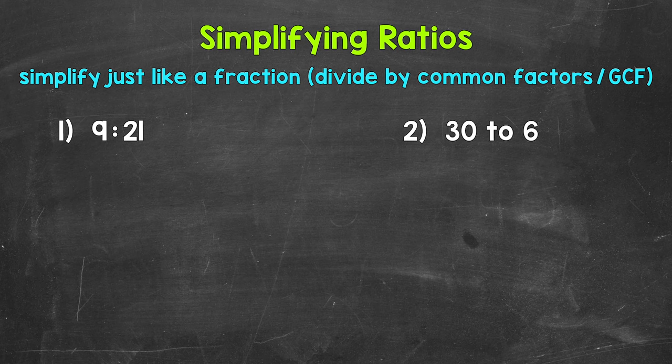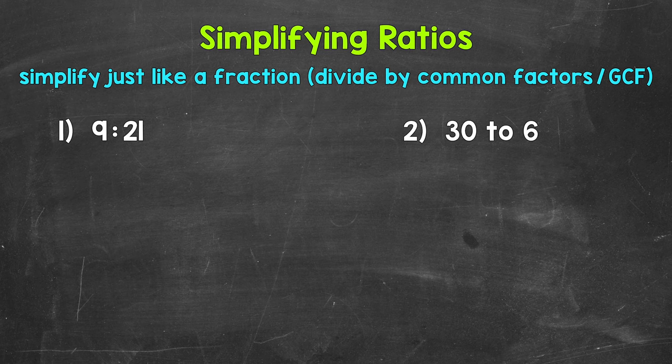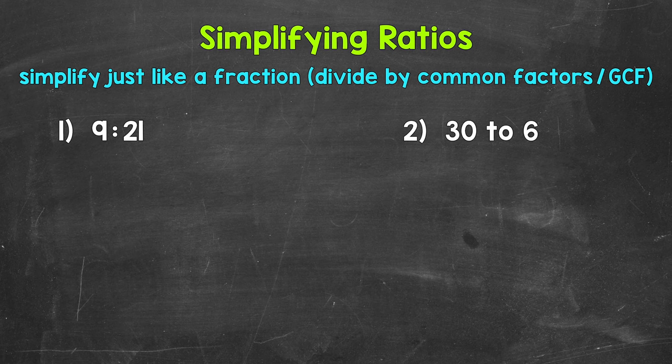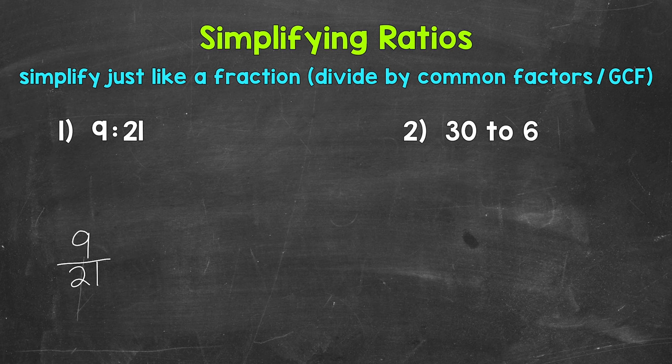Let's jump into number 1, where we have 9 to 21. Now you can simplify a ratio from whatever form it is originally in. So if it has a colon, if it's in fractional form, or using the word to. I'm actually going to take our ratio and rewrite it in fractional form. So it's just like simplifying a fraction.